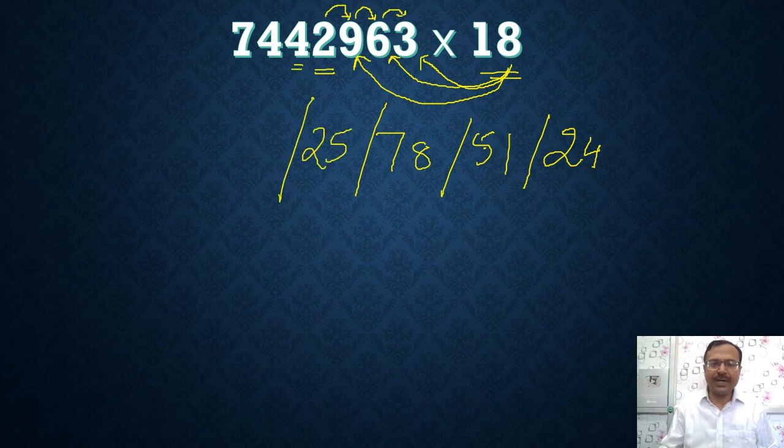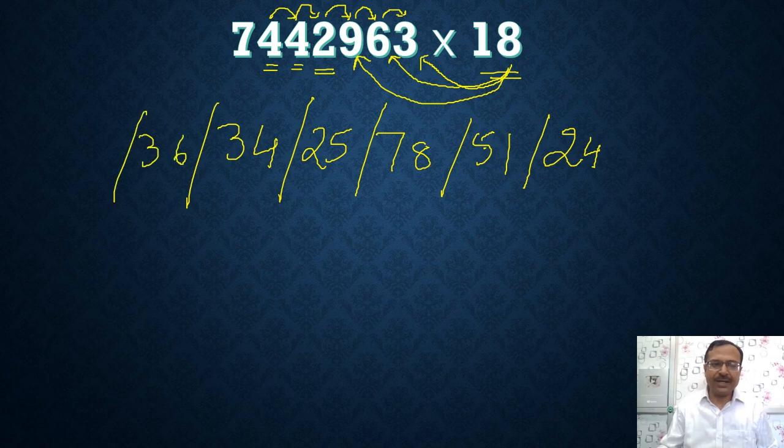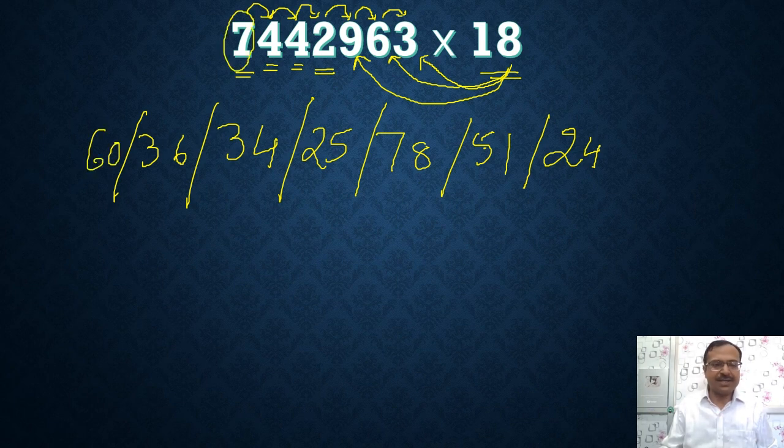8 times 4 is 32 plus 2 is 34. 8 times 4 is 32 plus 4 is 36. 8 times 7 is 56 plus 4 is 60. And then the last digit 7, this is to be written as it is here.